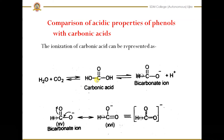Now we will compare phenol with carbonic acid. In carboxylic acid there is one OH group, but in carbonic acid there are two OH groups on both sides of the carbonyl group. The ionization of carbonic acid gives a bicarbonate anion (HO–C(=O)–O⁻) and a proton. For the bicarbonate anion, we can write two resonance structures where the negative charge shifts between the two oxygen atoms, and the resonance hybrid structure can be written accordingly.